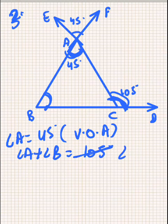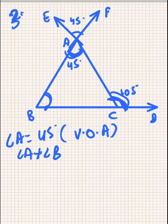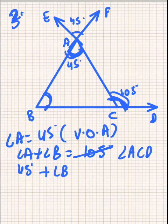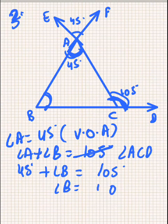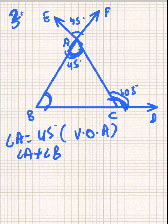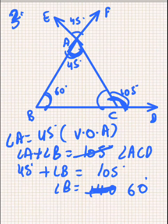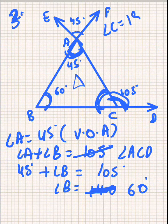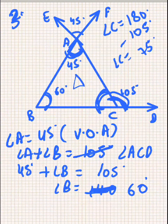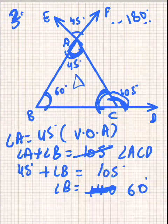These are the two interior opposite angles and this is the exterior angle, so it will be equal to 105 degrees, which we can also call angle ACD. Angle A is 45 degrees, angle ACD is 105 degrees, so angle B is 60 degrees. Now we can find angle C. Using the linear pair, angle C will be 180 minus 105, so angle C will be equal to 75 degrees. So we have found all angles of triangle ABC.